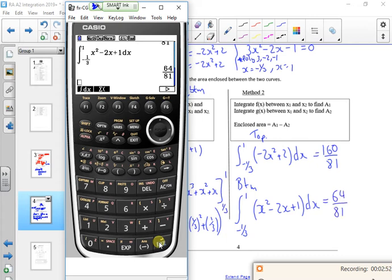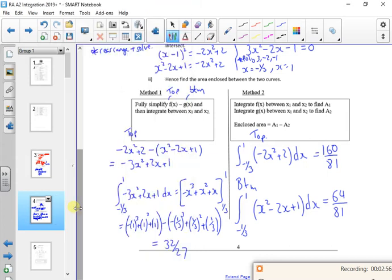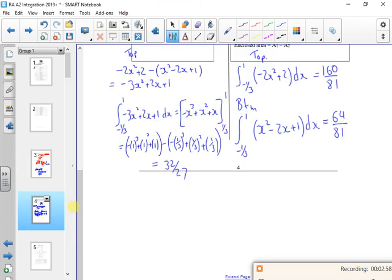Then the enclosed area is top to bottom. So it's 160 over 81 minus 64 over 81. So what's that? 96 over 81? Something like that. And that's going to cancel down. So 32 over 27.